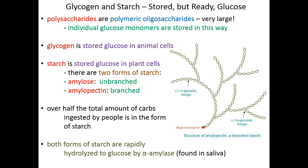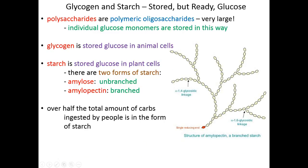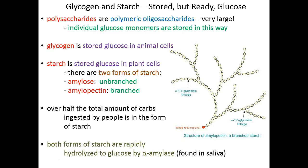Both forms of starch — amylose and amylopectin — can both be rapidly hydrolyzed to individual glucose monomers in our saliva. The first stage of digestion occurs in our mouth, and our saliva is teeming with an enzyme called alpha amylase. Alpha amylase can cleave amylose and start removing individual glucose branches from the end of an amylose chain. Amylase isn't quite as efficient on amylopectin, but it can break amylopectin down, so starch in general is digested initially in our saliva.